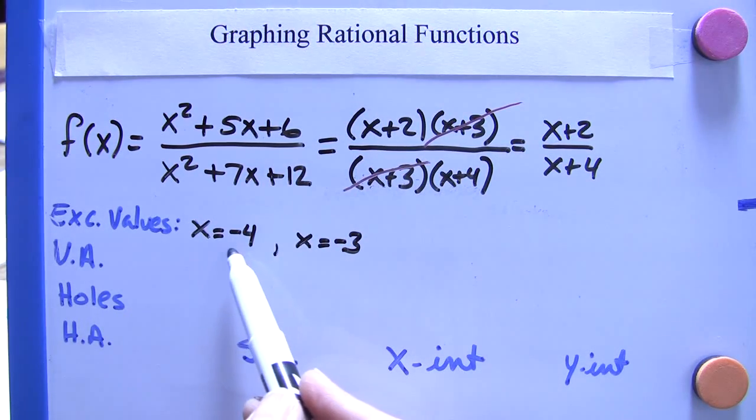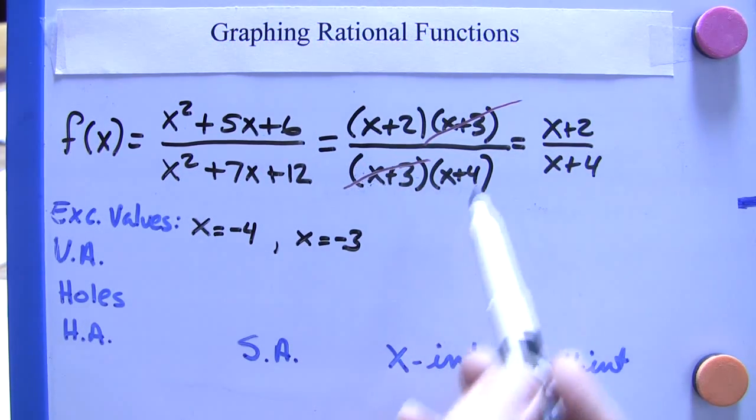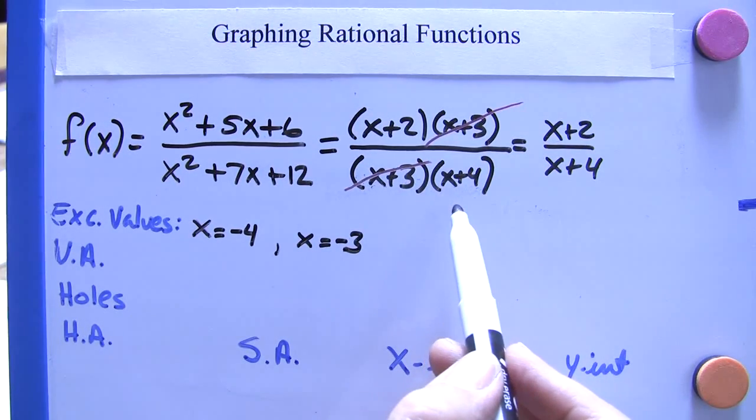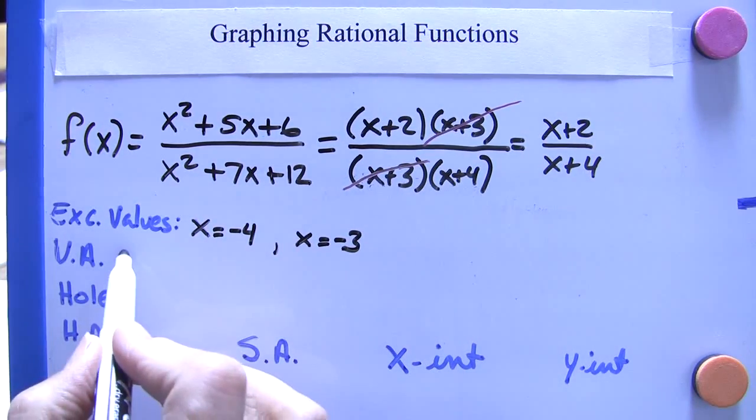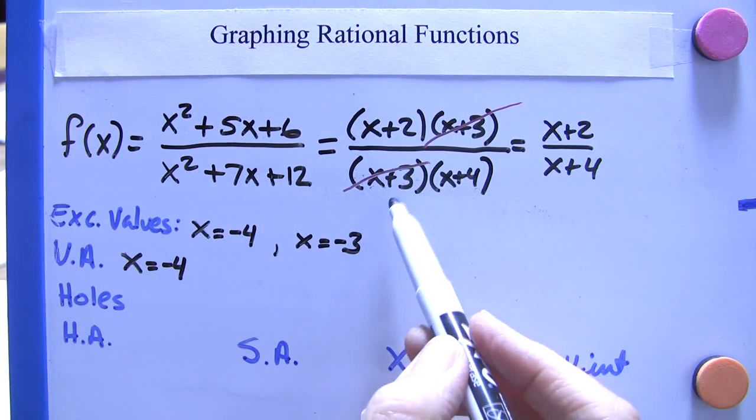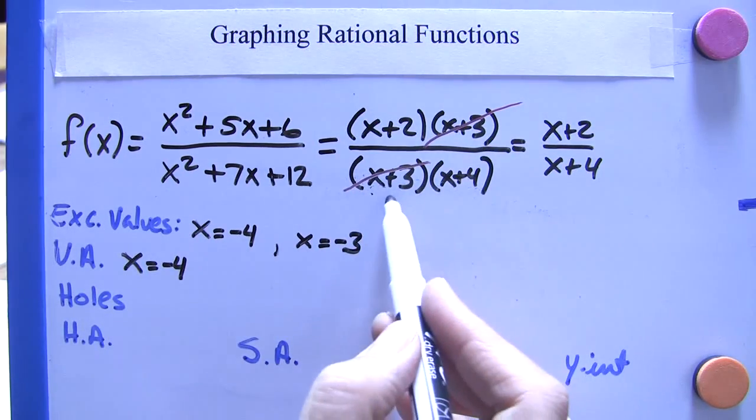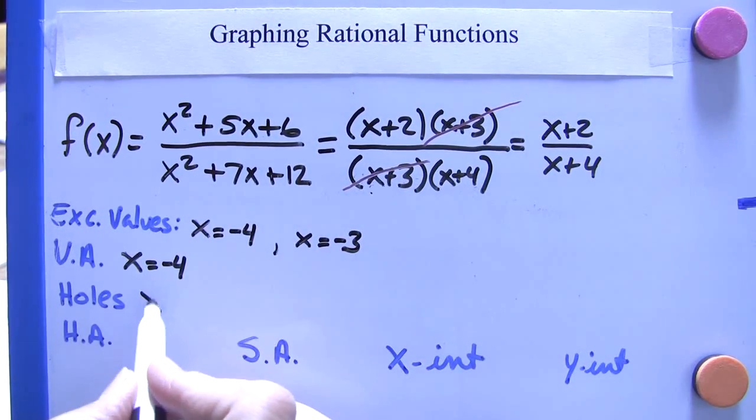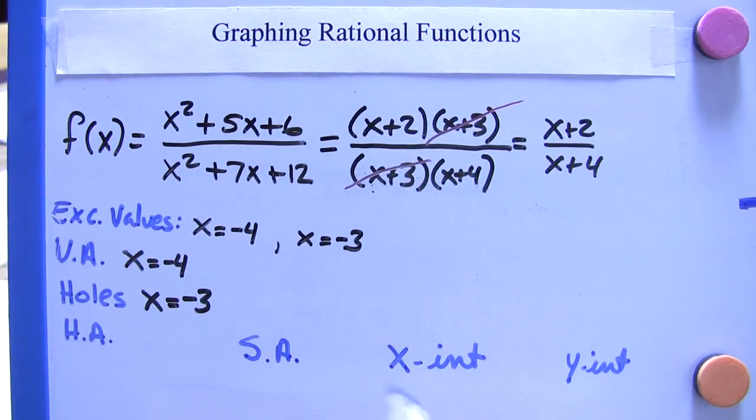This also tells us where our vertical asymptotes and our holes are. Our vertical asymptotes are where we have excluded values. So there is one here. There's a vertical asymptote at x equals negative 4. Now, this is not a vertical asymptote. This is going to be a hole because it was reduced out. So there's going to be a hole at x equals negative 3.